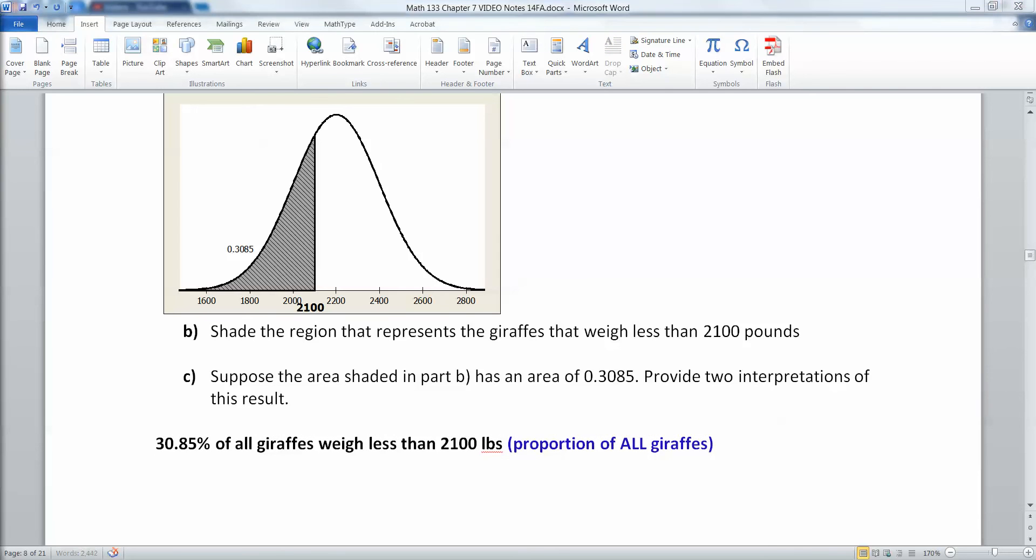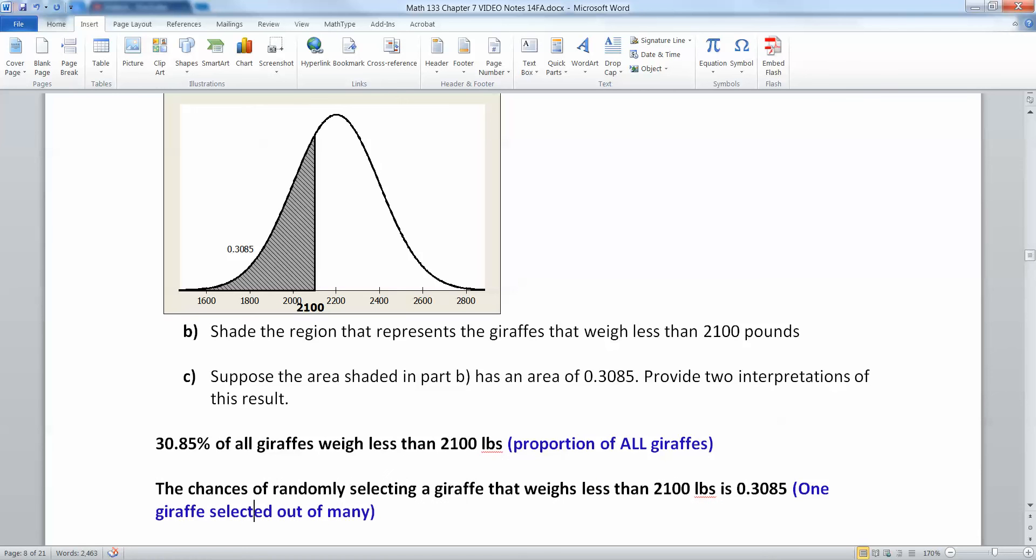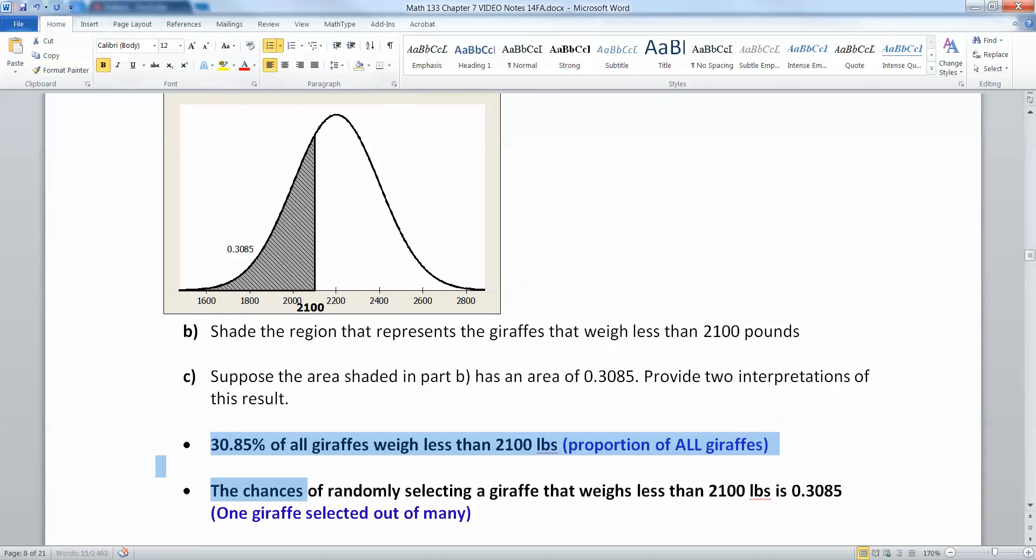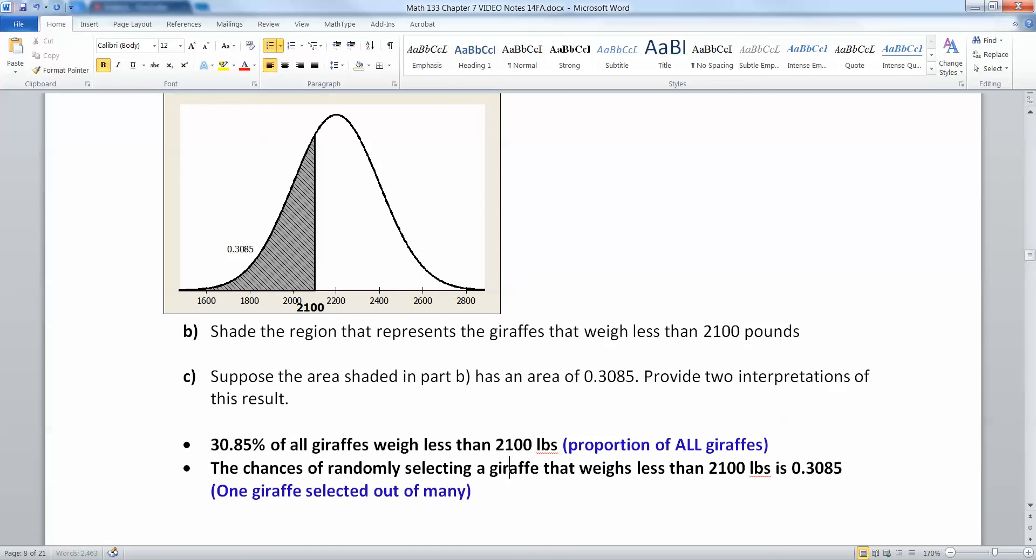You can think of it as a proportion of all giraffes, namely 30.85 percent of all giraffes weigh less than 2100 pounds. Or you could think of it as the chances of a single randomly selected giraffe weighing less than 2100 pounds is 0.3085. Two different ways to think about it, they're both okay.